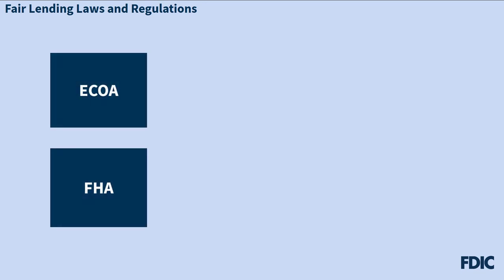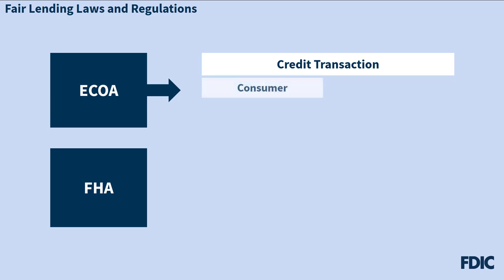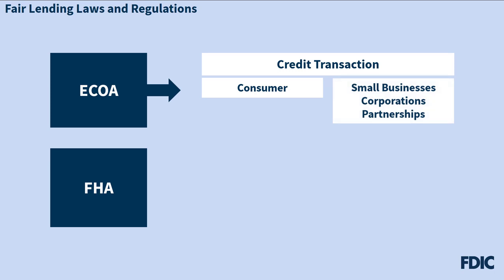So, what are the differences between ECOA and the FHA? ECOA prohibits discrimination in any aspect of a credit transaction. This includes not only consumer credit transactions, but also extensions of credit to small businesses, corporations, and partnerships. The FHA prohibits discrimination in residential real estate-related transactions and extends beyond just the credit transaction.